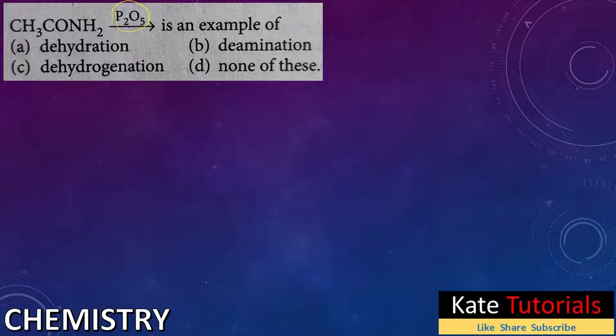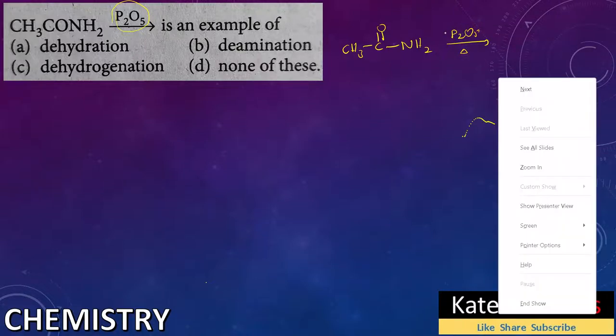So if you know the reaction then you can tell the thing about P2O5. So the reaction is simple like this, right, CH3CONH2, and if we heat it in presence of P2O5, the reaction will be carried out with little heating.